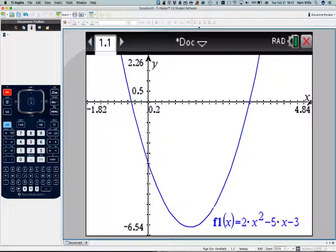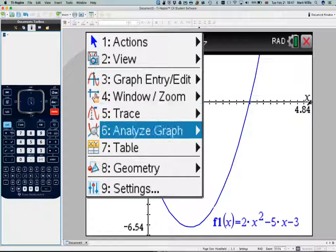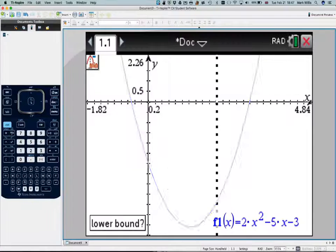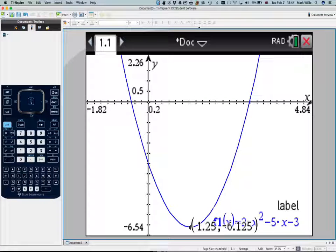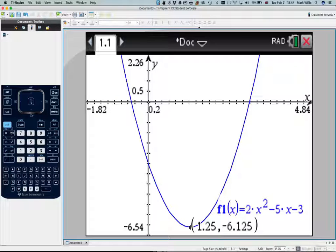Right, we're going to go find the vertex again. So menu, analyze the graph, it's a minimum. So go to the left, go to the right.